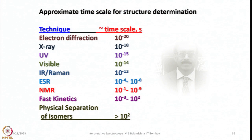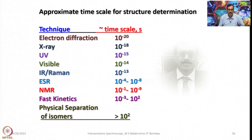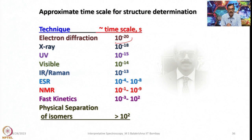The approximate time scale for structure determination using various techniques is very important. That gives some information about the limitations or advantages of a particular technique when we want to use it as an analytical tool to understand the structure of a molecule. For example, in the case of electron diffraction we can use up to 10⁻²⁰ seconds, for X-ray it is about 10⁻¹⁸, and for UV it is 10⁻¹⁵.